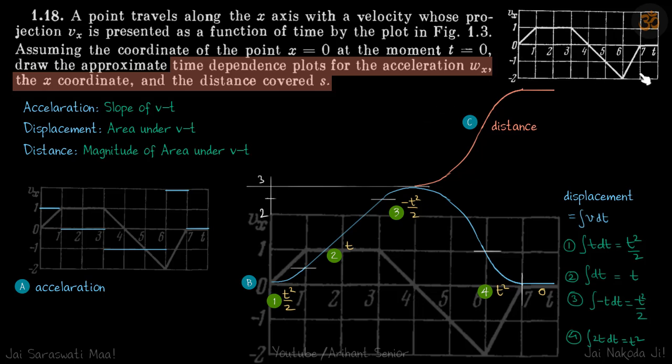We are given a v-t graph and we need to make the graphs for acceleration, displacement, and distance from this v-t graph. A few things you must know: acceleration is the slope of v-t graph, displacement is the area under v-t graph, and distance is the magnitude of area under v-t graph. So keep adding the areas and you get the distance.